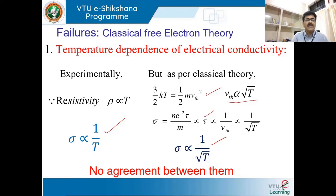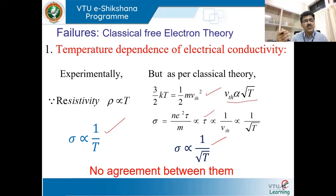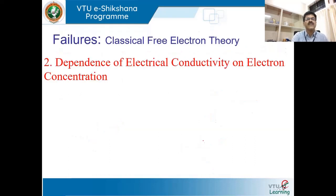So, classically σ is inversely proportional to the square root of temperature, but experimentally it is inversely proportional to temperature directly. There is no clear agreement between the classical and experimental theory. Hence, this is the first failure of the classical free electron theory.